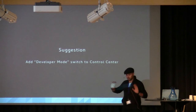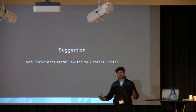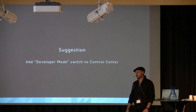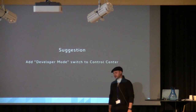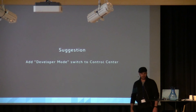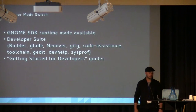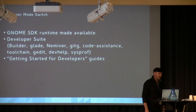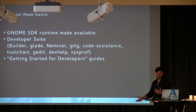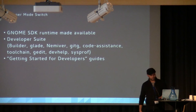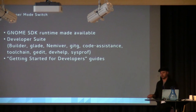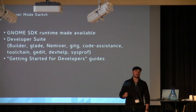So I have a suggestion. Step one: a developer mode switch. Many of you have Android devices — you may have done the little magic tap to turn on developer mode so you can connect to your computer and get debug mode. We could have something very similar in GNOME in Control Center. When you flip this developer switch, all of a sudden the GNOME SDK could be made available, enabled by something like XDG app. We could have the developer suite — that could be Builder or something else — toolchain, editors, debuggers, profilers. And then importantly, a 'getting started' guide for developers, to help people get their first window on screen.